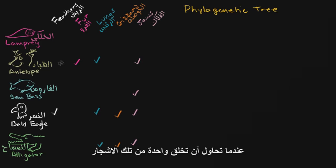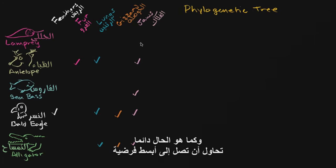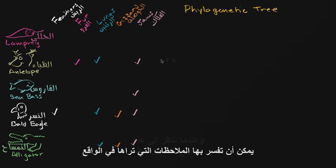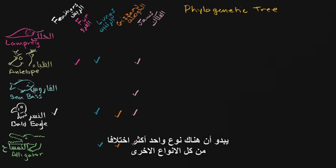When you're trying to make one of these trees, it's important to realize that this is a hypothesis. But you're always trying to come up with the simplest hypothesis that can explain the observations you actually see. When we look at the species we have listed here, it looks like there's one that is more different than all the others.